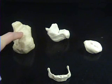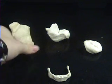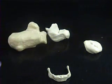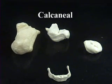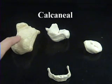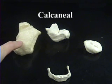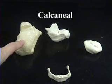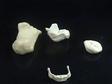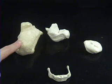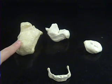Continuing to our right, we have this large irregular shaped bone known as the calcaneal bone. The calcaneal bone is commonly known as your heel bone. What articulates with this bone superiorly? You have the talus. What articulates with the calcaneal bone distally? You have your cuboid.